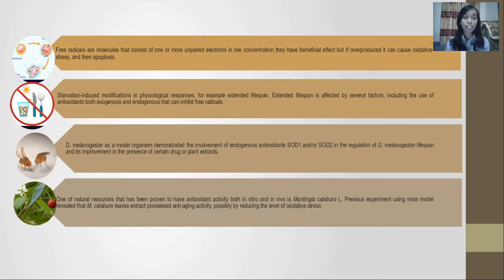Free radicals are molecules that consist of one or more unpaired electrons. In low concentration, free radicals have a beneficial effect on the body. But if they are overproduced, it can cause oxidative stress.